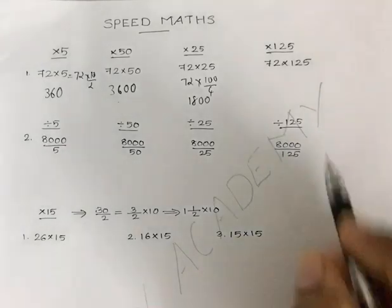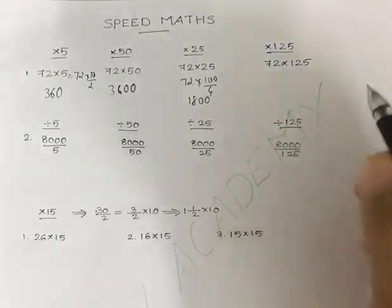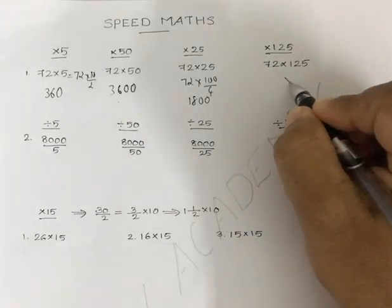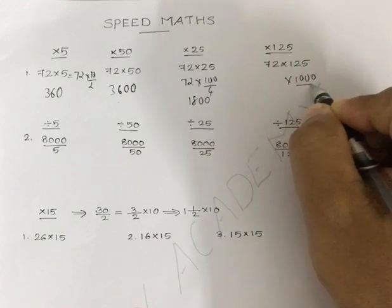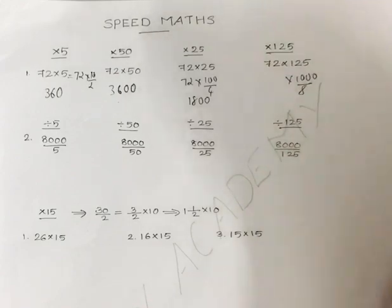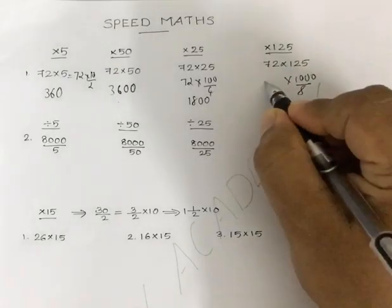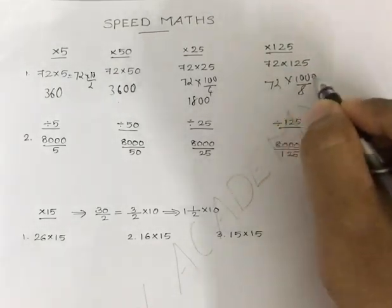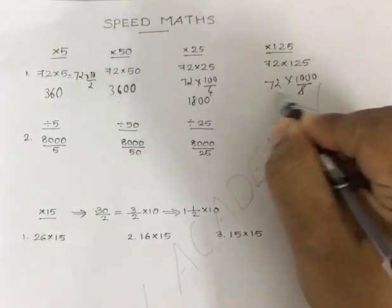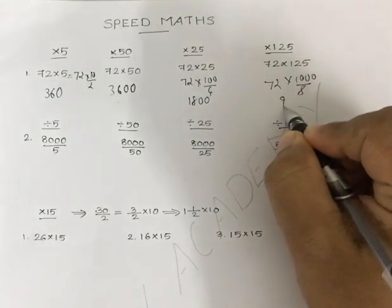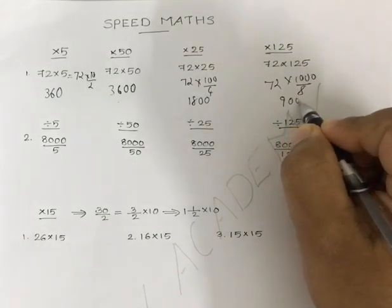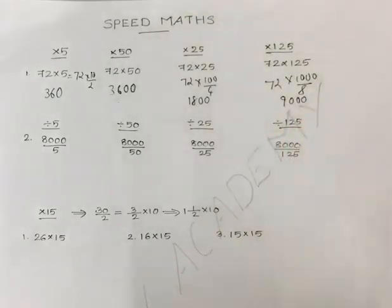Multiplication with 125 is very important. 125 is 1000 by 8. So 72 into 125 is 72 into 1000 by 8, which is 72 by 8 — that's 9. So the answer is 9000.